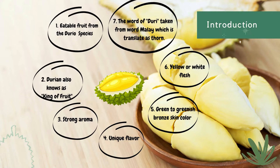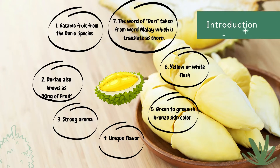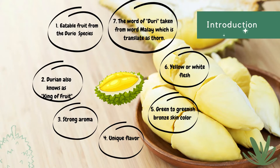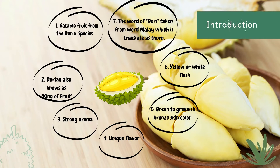Durian is an edible fruit from the durio species. Durian is also known as the king of fruit because of its strong aroma and unique flavor. Durian has green to greenish bronze skin color and yellow or white flesh. The word 'duri', taken from Malay, translates as a thorn, which shows the durian's characteristic.